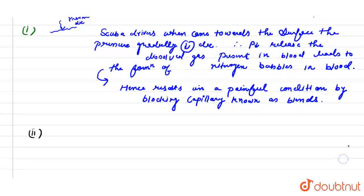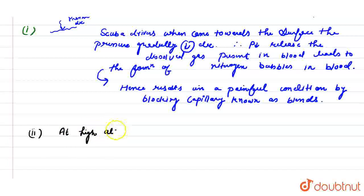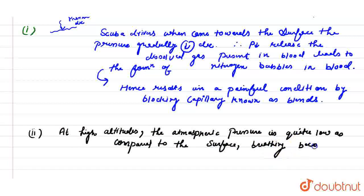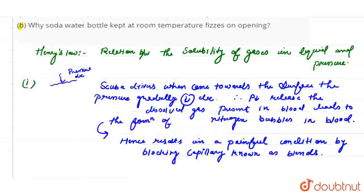Writing down the statement: at high altitude — for example, going to the mountain — the atmospheric pressure is quite low as compared to the surface. Breathing becomes difficult. Hence, we feel weakness and discomfort. This is the answer to the second question.